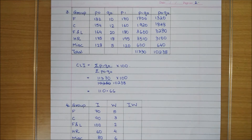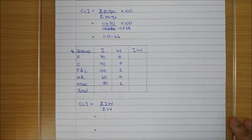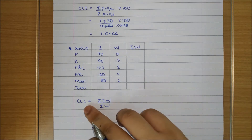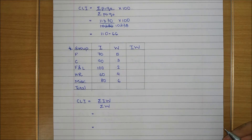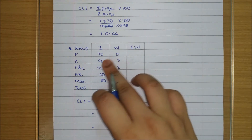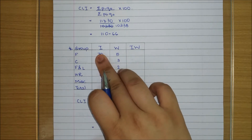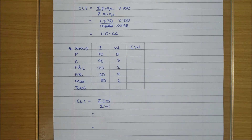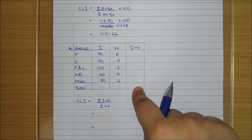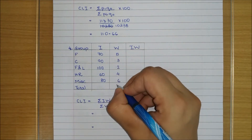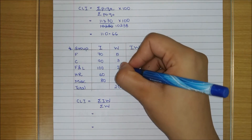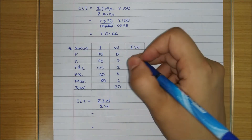Let's move on to the next question. In this question we are using the family budget method to find the cost of living index number. In this method we first find the column I into W, where I is the price relative and W is the weightage of the base year. Then we add all W values and all I·W values. Adding up W: 6+4=10, 2+3+5=10, giving total W = 20.